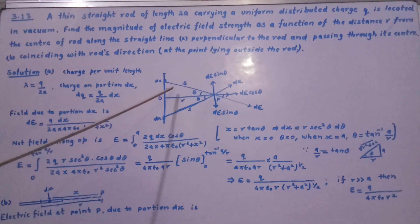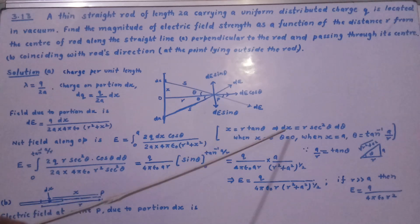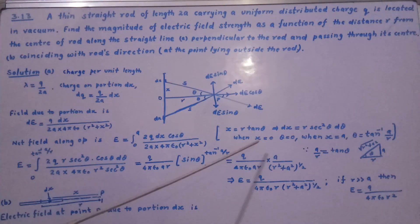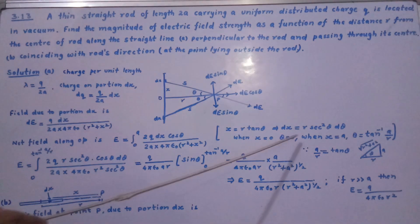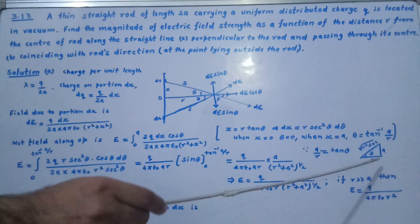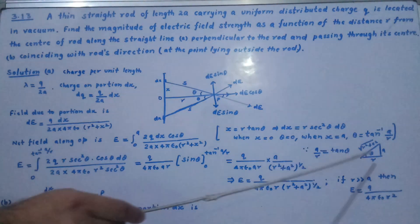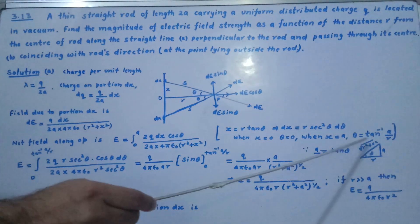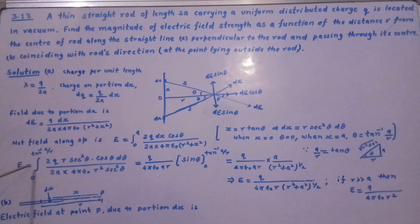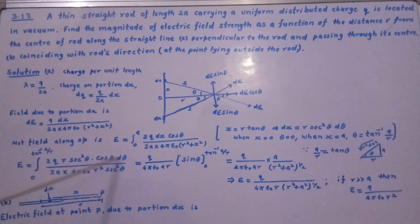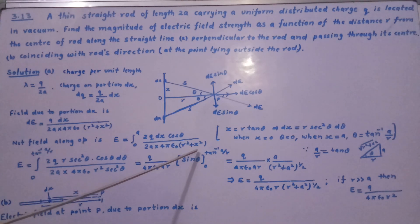Here x/r = tanθ, so differentiating gives dx = r sec²θ dθ. Putting the limits: when x = 0, θ = 0; and when x = a, θ = tan⁻¹(a/r). Drawing the triangle with a/r = tanθ, we get sinθ = a / √(r² + a²), which we will use later. Substituting x = r tanθ into the integral, we write E = ∫₀^{tan⁻¹(a/r)} [2Q · r sec²θ · cosθ dθ] / [2A · 4πε · r² sec²θ]. Here r²(1 + tan²θ) = r² sec²θ.